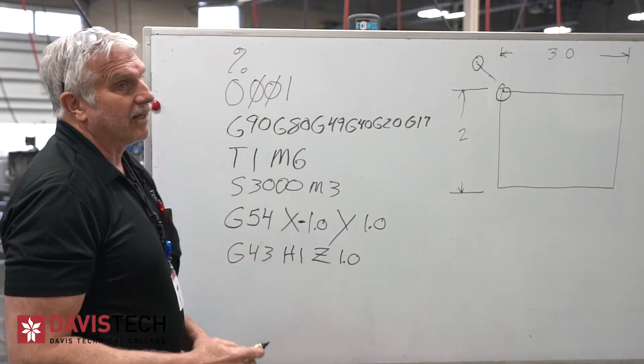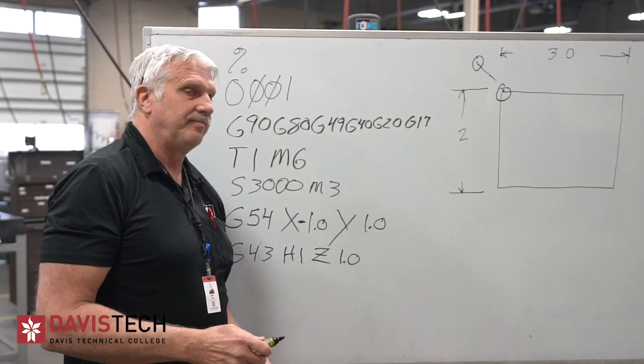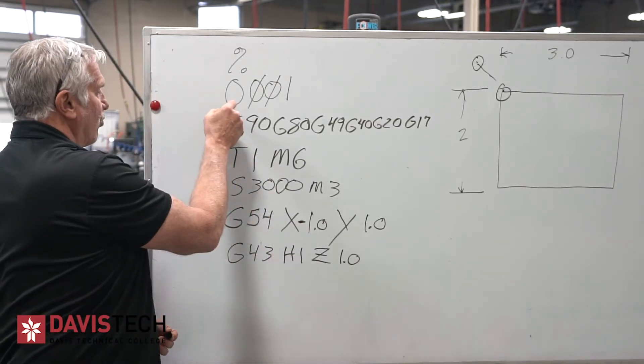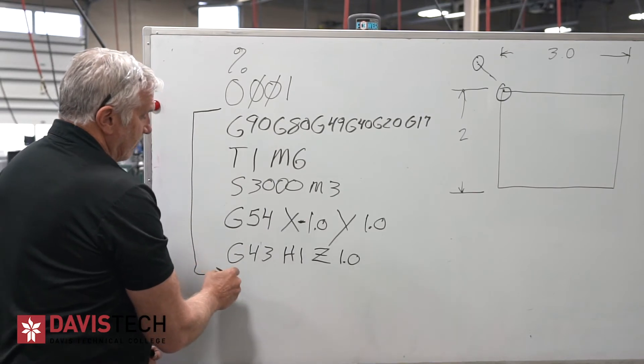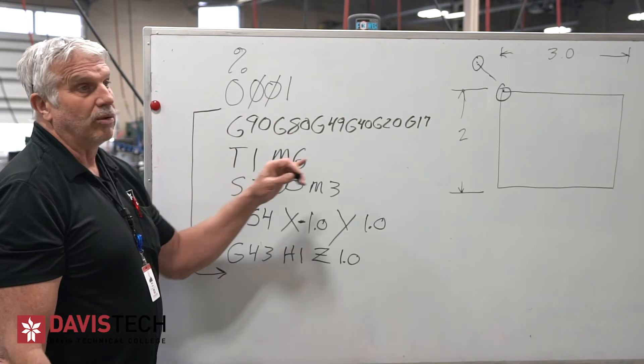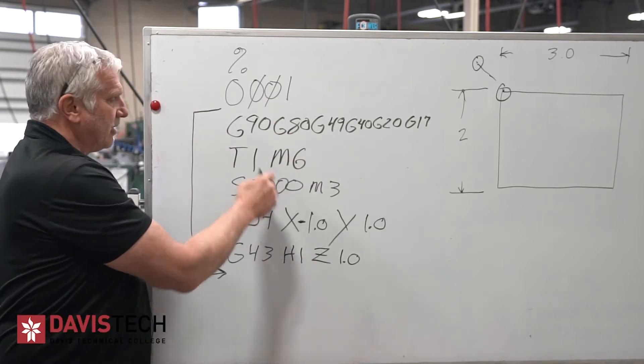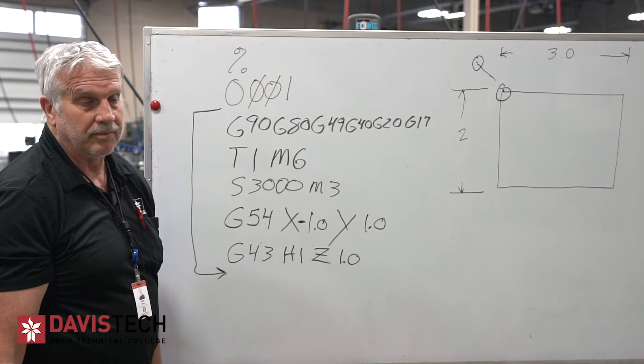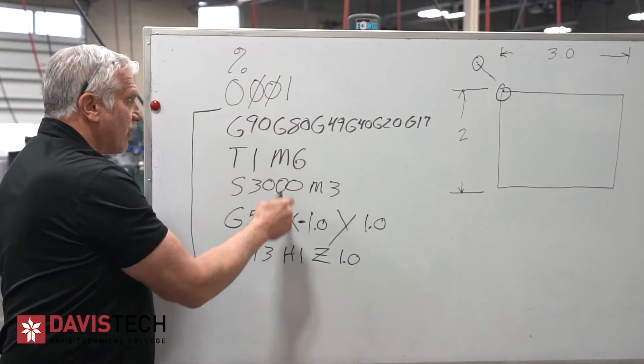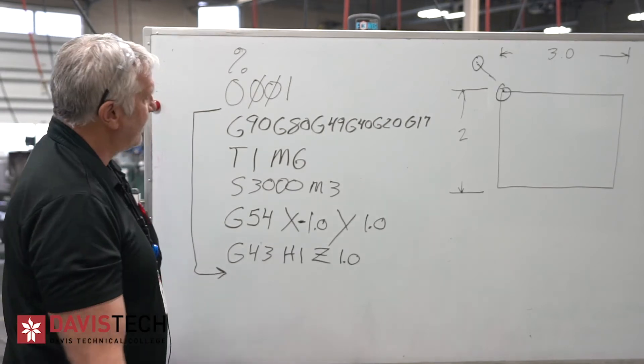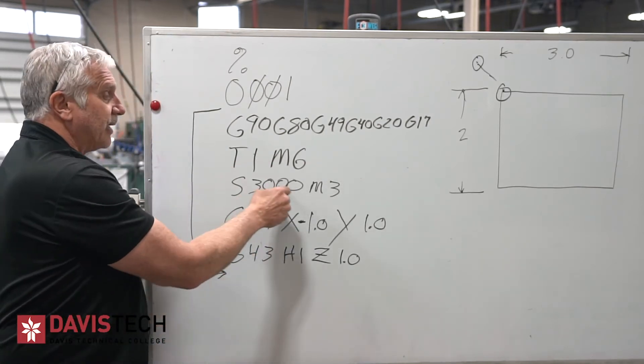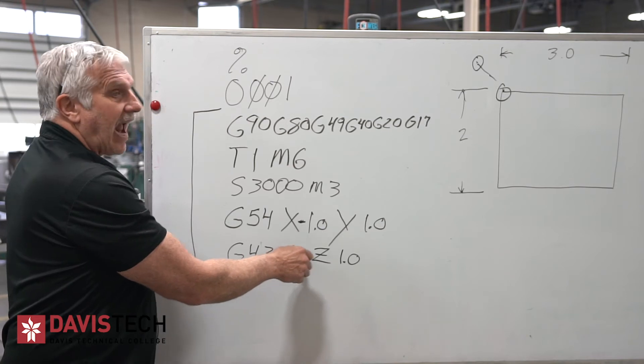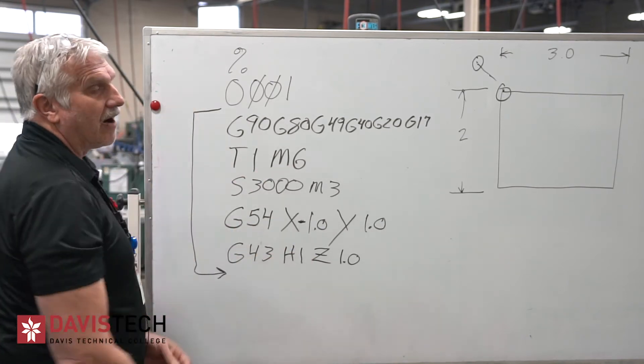So this is kind of, if I'm doing an operation, I might have five different tools. For every tool that I use, I am basically going to rewrite this every time. So if I'm using tool two, the only thing that changes is T2. And right here, H2. I might have a different spindle speed also. So that might change, but everything remains the same in that respect. If I'm running tool five, then this is going to become T5. My spindle speed might change according to the size of the tool. And then over here, instead of H1, it's going to say H5. So this is kind of the beginning of your program.